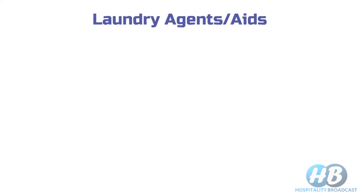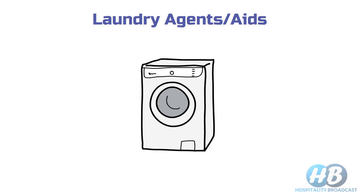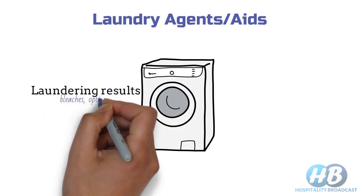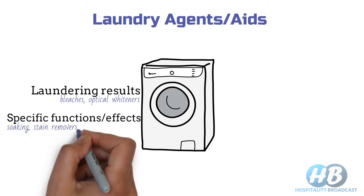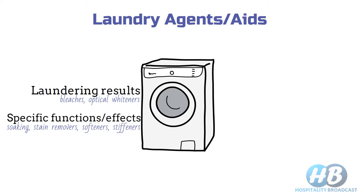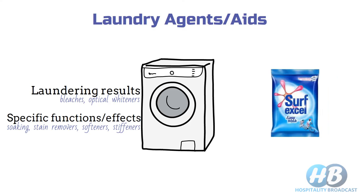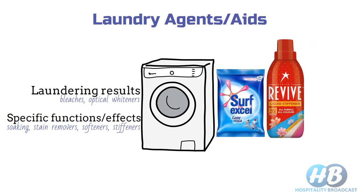Next, laundry agents or aids. Laundry agents are used to improve laundering results with the help of chemicals such as bleach and optical whiteners, or to achieve specific functions such as soaking, stain removal, softening, stiffening, etc. Some common laundry agents are water, laundry soap and detergent, stiffeners, acid and alkaline agents, bleach, organic solvent absorbents, etc.